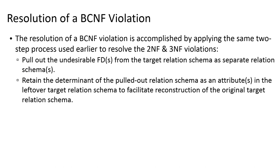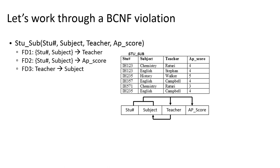In order to resolve our BCNF violation, we do the same thing we did to resolve second and third normal form violations: we move the undesirable functional dependencies out from the source relation into a new relation, leaving behind the determinant in that functional dependency so that we can bring these relations back together at a later point in time.